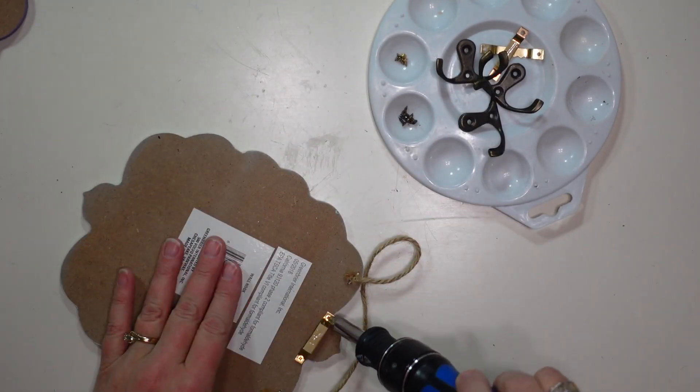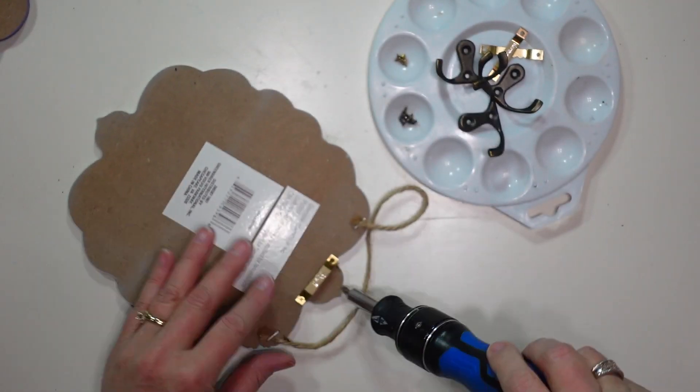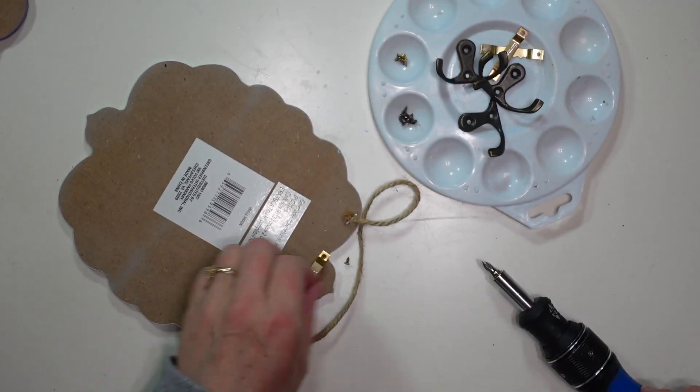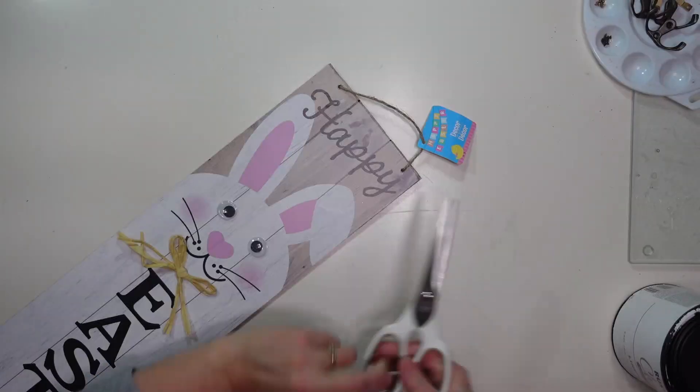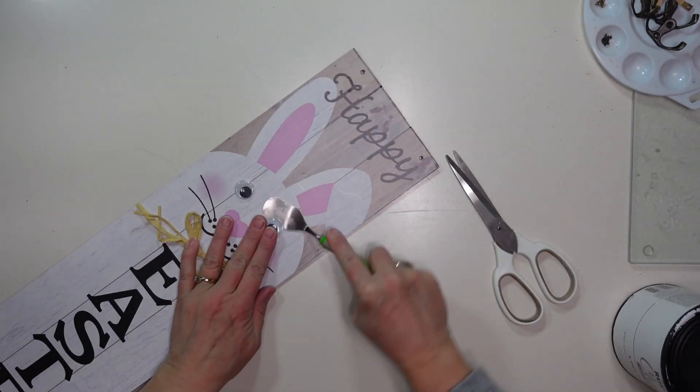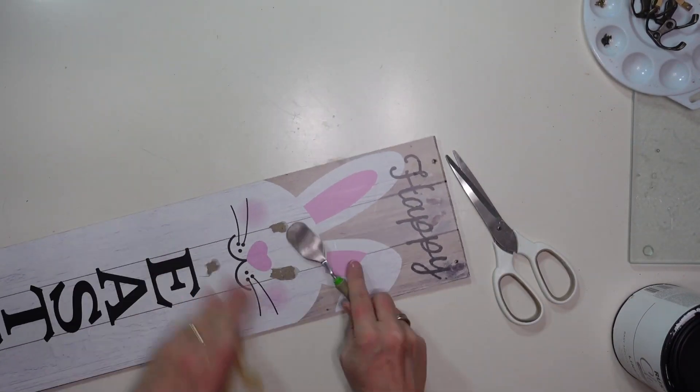I'm going to start by removing all of the hooks, hangers and labels off of my little signs and I will save those hooks and hangers because I will be reusing them. I'm also going to remove the hanger and the embellishments from my long sign as well.